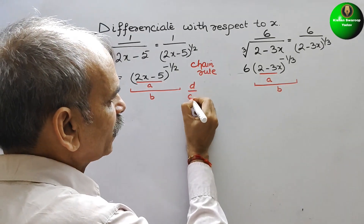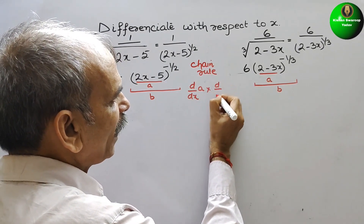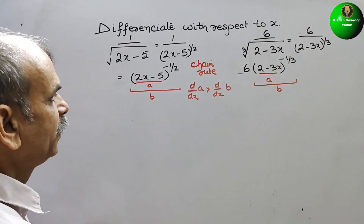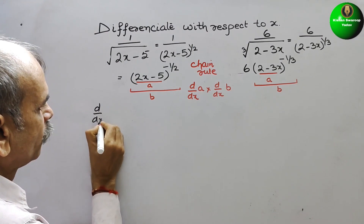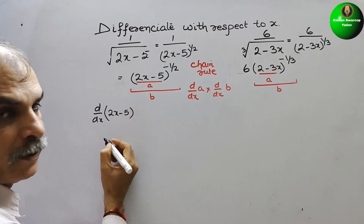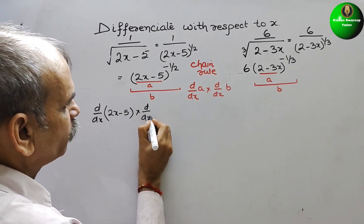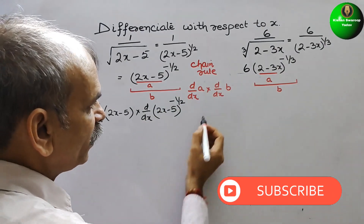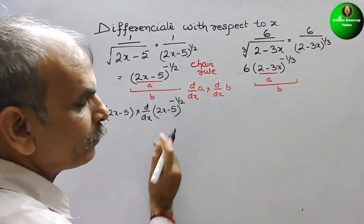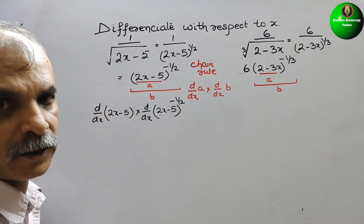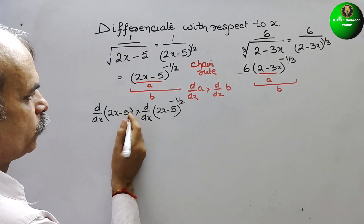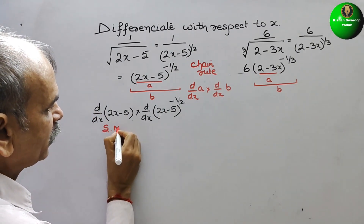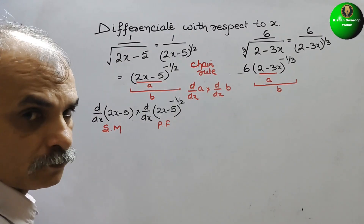So we go for d by dx of a, into d by dx of b. Rewriting: d by dx of 2x minus 5 — that is your 'a' — into d by dx of (2x minus 5) to the power minus 1 by 2. When differentiating b, we should not differentiate the bracket again, because we have already differentiated it as 'a'.